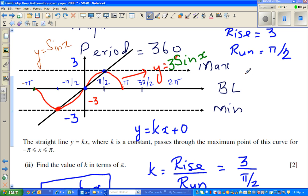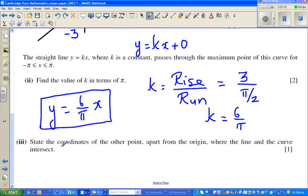If the rise is minus 3 and the run is minus pi by 2, the gradient would be the same because rise over run, 3 over pi by 2 is 6 over pi, and the negatives cancel. So the other point would be negative pi by 2, comma negative 3.